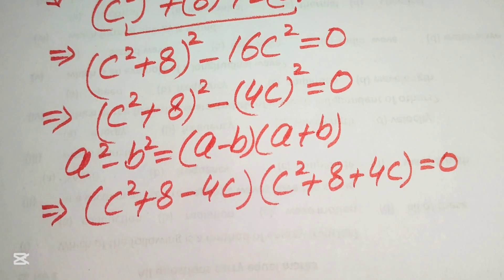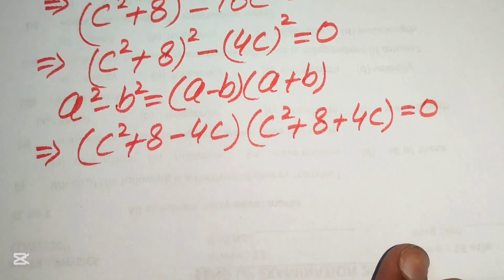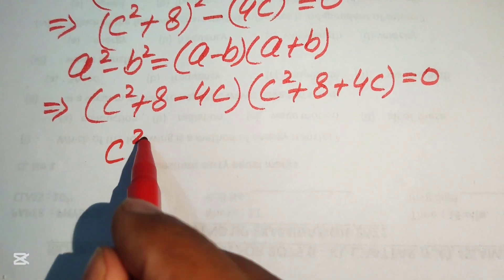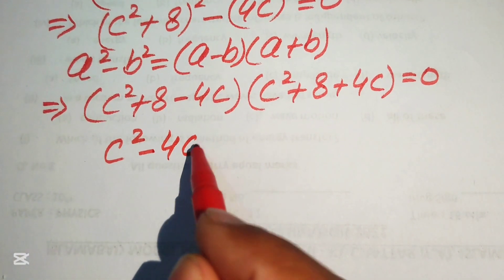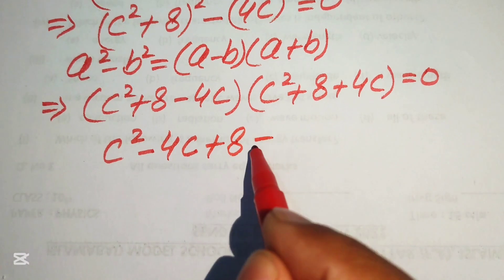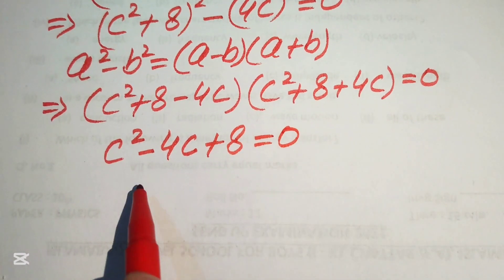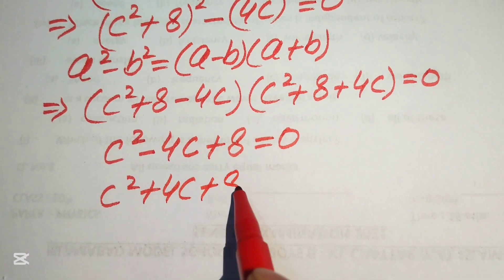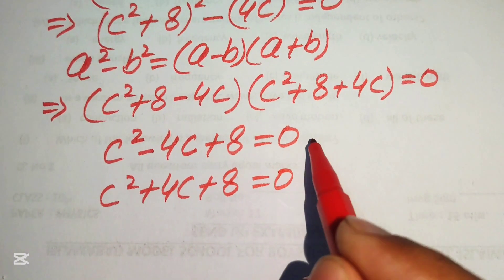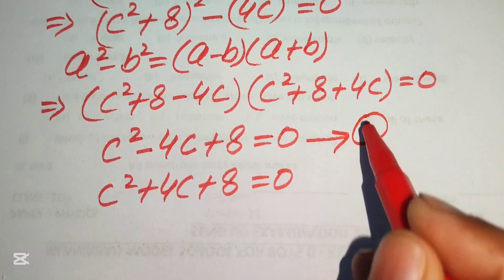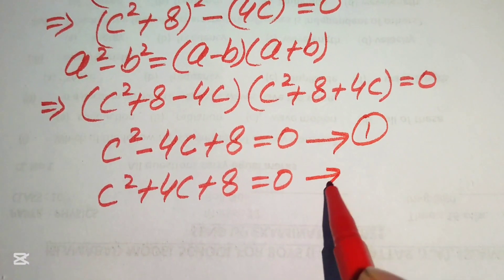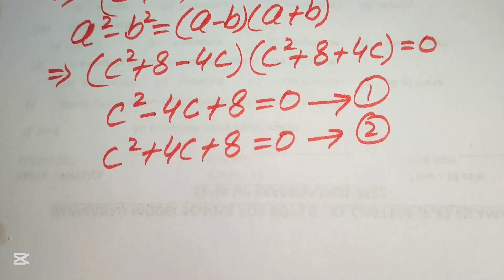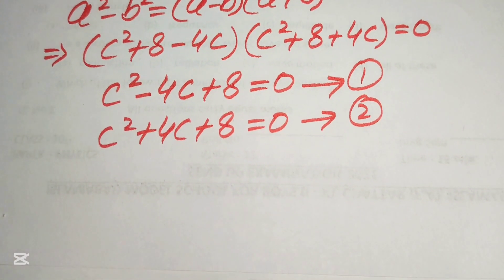We split into two cases: equation 1 is c squared minus 4c plus 8 equals 0, and equation 2 is c squared plus 4c plus 8 equals 0. We now solve these two equations simultaneously.